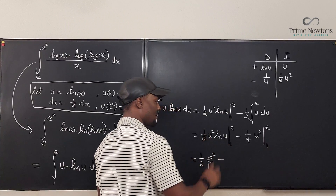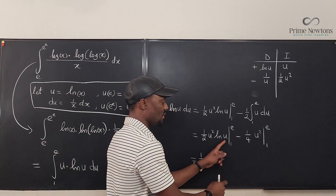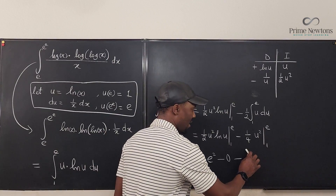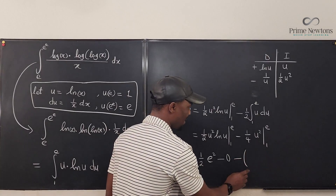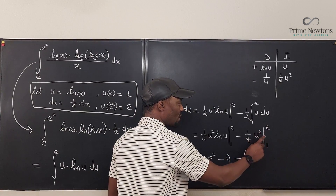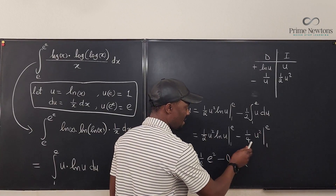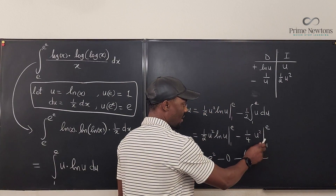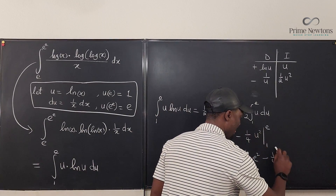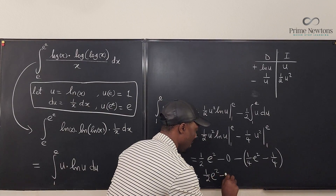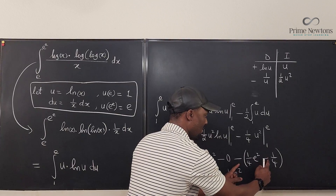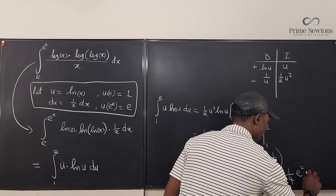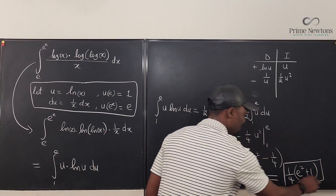Now subtracting the lower bound u = 1: (1/2)·1²·ln(1) = 0 since ln(1) = 0. For the second term: (1/4)e² minus (1/4)·1² = (1/4)e² − 1/4. Combining everything: (1/2)e² − (1/4)e² + 1/4 = (1/4)e² + 1/4. So the final answer is one-fourth of (e² + 1).